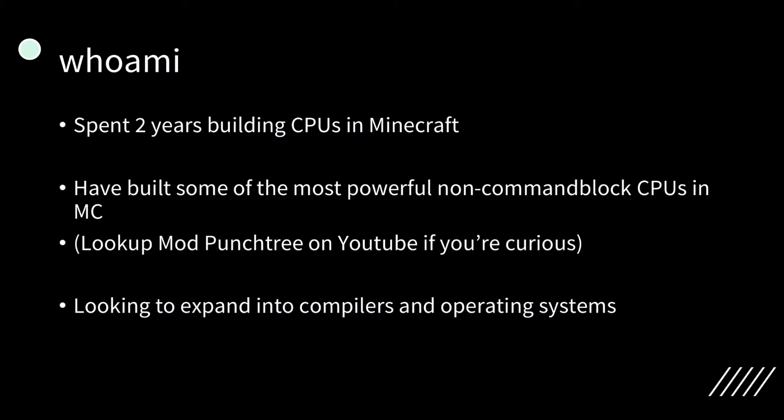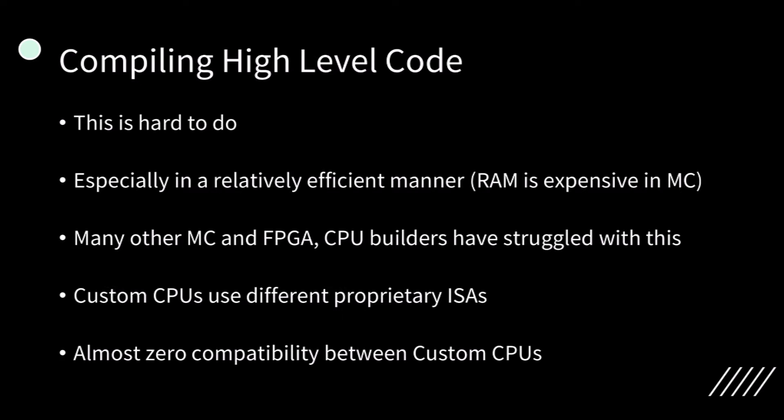I am currently looking to expand into compilers and operating systems. Before I start talking about URCL itself, I want to give some context as to why URCL exists in the first place. Compiling high-level code is relatively hard to do, especially in an efficient manner, since RAM is expensive in Minecraft. Many other Minecraft and FPGA CPU builders have struggled with this. Custom CPUs tend to all use different proprietary ISAs, and this means there's almost zero compatibility between custom CPUs. Even if one person manages to write a compiler for their CPU, that does not help anybody else.